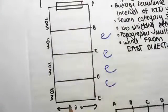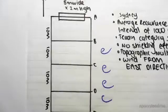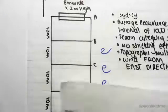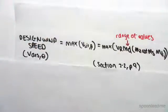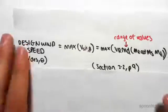In this video we're going to be looking at finding the design wind speed. The design wind speed v des comma theta is calculated as the maximum of the site wind speed.